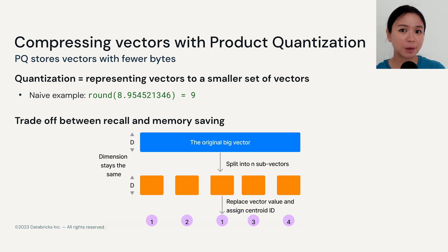Say that the first sub-vector is closest to the first centroid, centroid 1. Then we will replace the vector value with a value of 1. Now you can start to see how we can actually reduce the number of bytes. Instead of storing many floats, we are storing a single integer value.